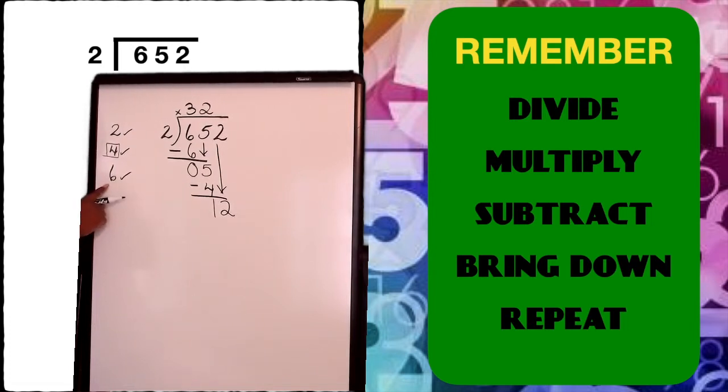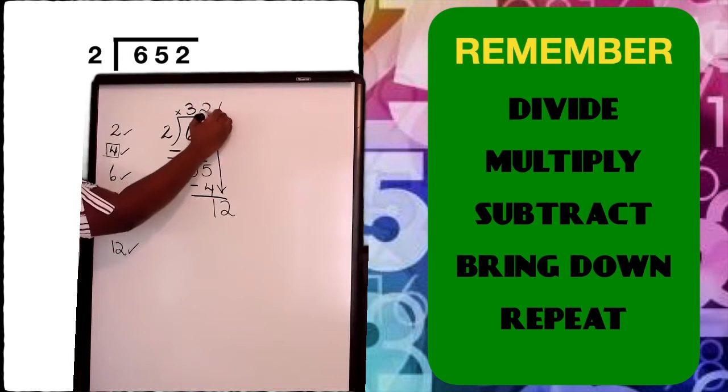Now I subtract. Four from five leaves me with one. I bring down my two, and my new number is 12. Now I ask myself, how many groups of twos can I get out of 12? Now again, I look at the multiples that I've listed already. I stopped at six, so I need to list some more multiples until I get as close to 12 as possible. Let's list some more multiples: two, four, six, eight, ten, twelve. I can stop right there. How many groups of twos was that? That was one, two, three, four, five, six. Six groups of twos.